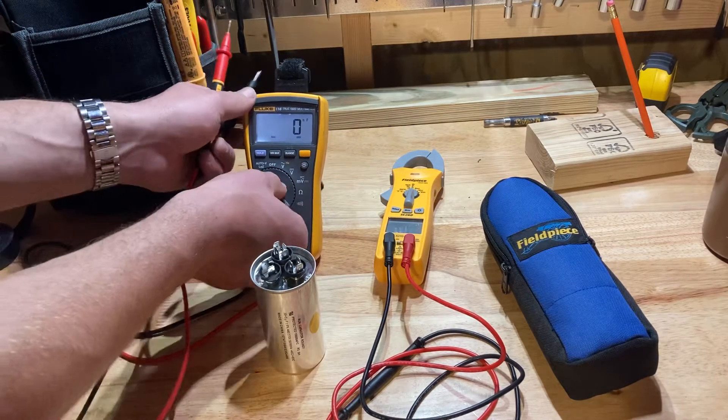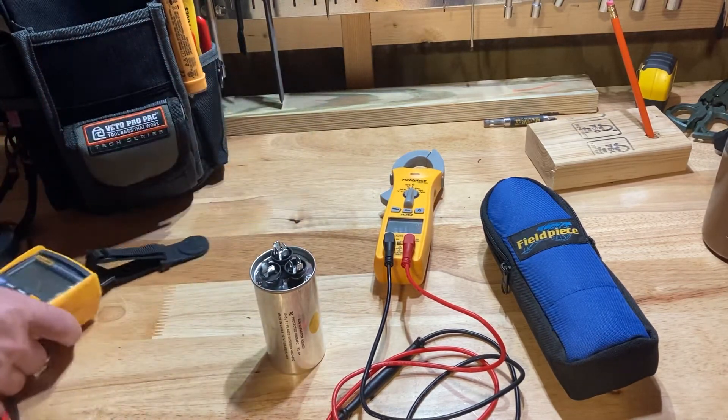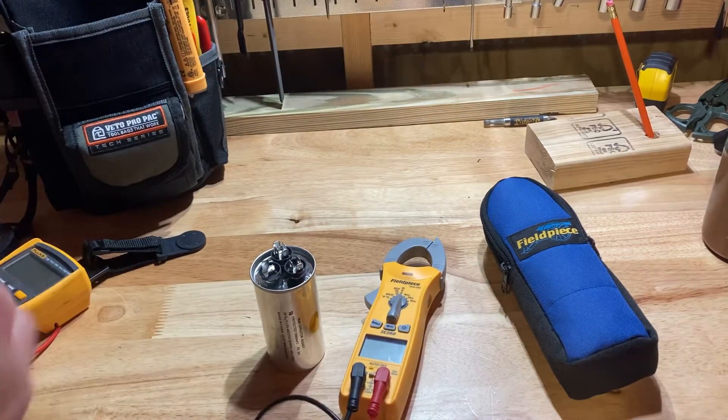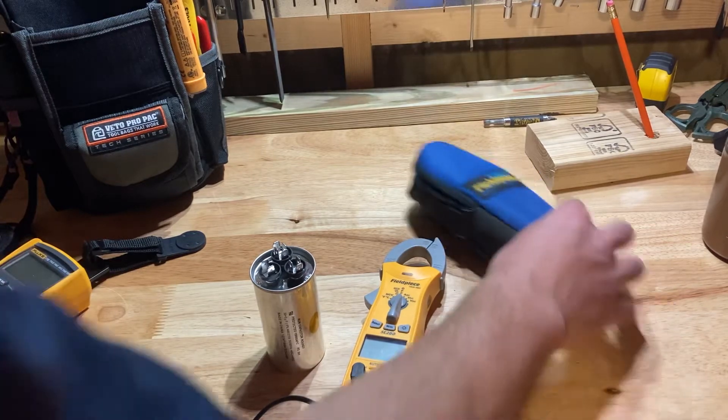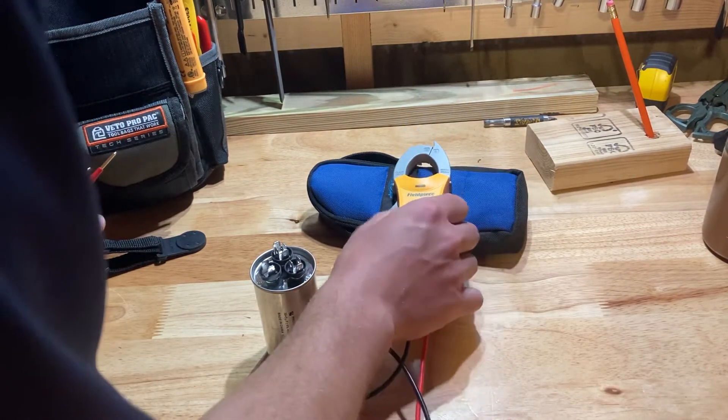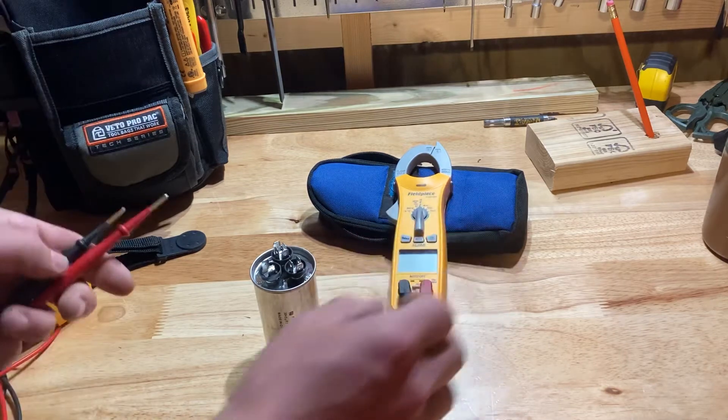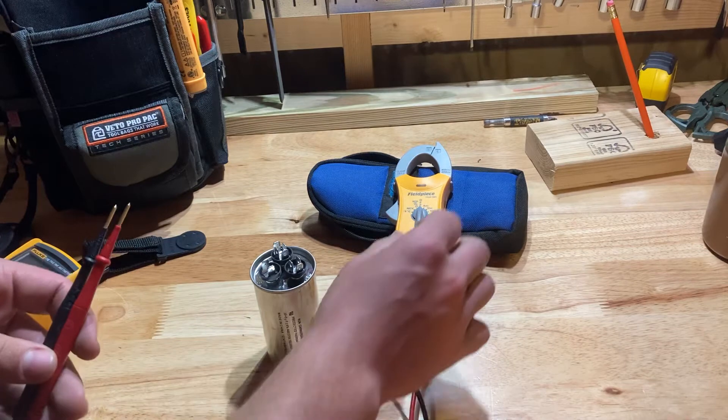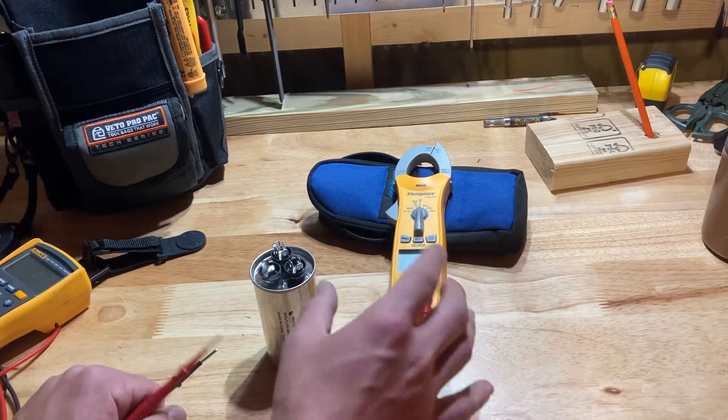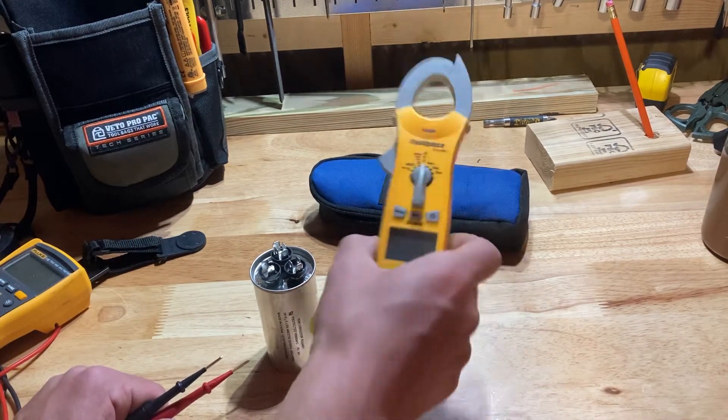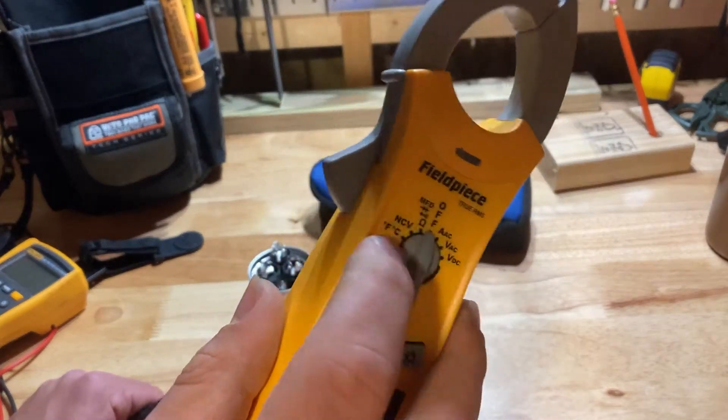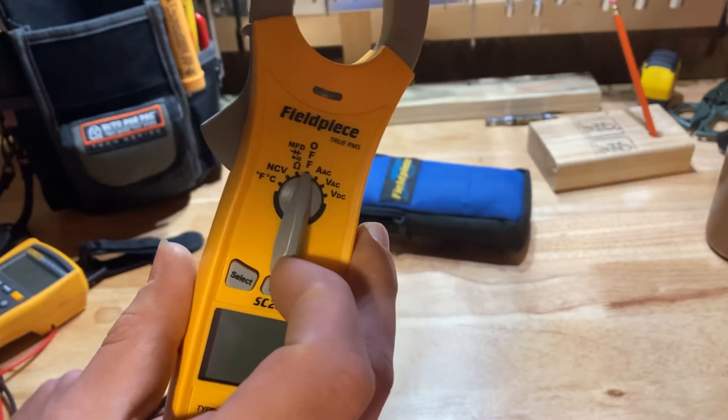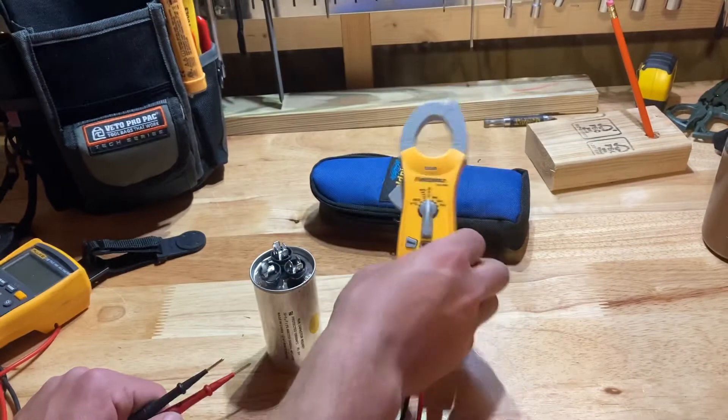Now I'm going to see how this stupid Fieldpiece does. I have a feeling that it's going to probably want to act right now that it's on camera. But I think the reason that it jumps around and is annoying is because its setting is an auto setting where it has ohms, continuity, and microfarads together, and it senses what you're trying to do.